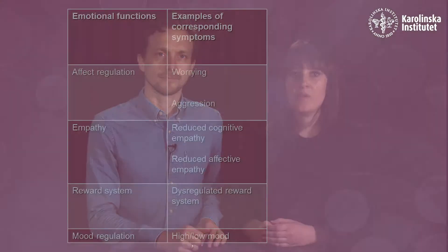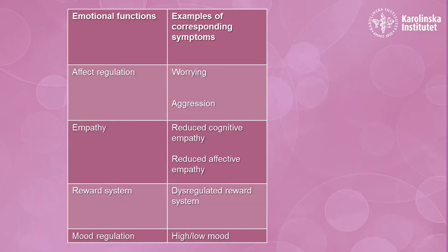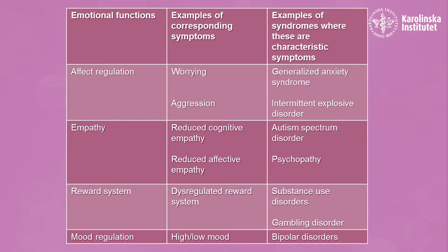Here is a list of a few examples. Disturbances of affect regulation can lead to constant worrying or bursts of aggression. For some psychiatric disorders, these symptoms are the most characteristic. Looking at the same table, worrying is a core feature of generalized anxiety disorder, and episodes of aggression are characteristic of intermittent explosive disorder. Current diagnostic manuals group disorders according to symptomatology and course, not neurobiology.